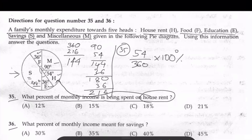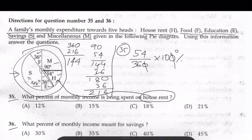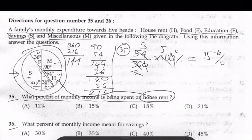Because house rent is 54 out of 360. Cancel and simplify: 54 divided by 360 into 100 gives 15%. So the answer is B, 15%.